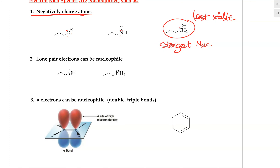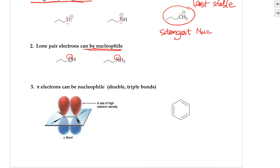Second, lone pairs of electrons on neutral atoms can also be good nucleophiles. These lone pairs on neutral atoms are not as electron-rich as species carrying a negative charge; however, they can still be good nucleophiles. For example, oxygen has a lone pair of electrons on it, and so does nitrogen, making them both reactive as nucleophiles.